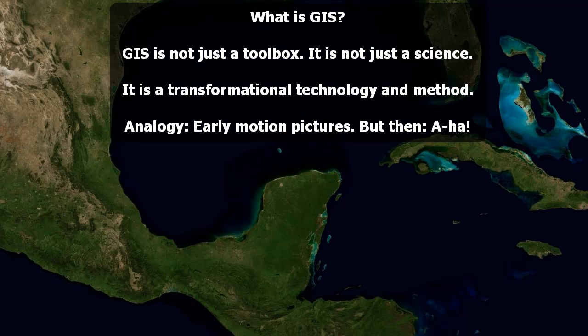What is GIS, or geographic information systems? It's not just a box of a bunch of tools. It's not just a science — geographic information science. It is a transformational technology and method. Consider the following: when motion pictures were first developed, at first they were filming stage plays — what had already been taking place on stage. But then, we can take the camera outside. We don't have to just film the same things. That's what I mean about GIS.